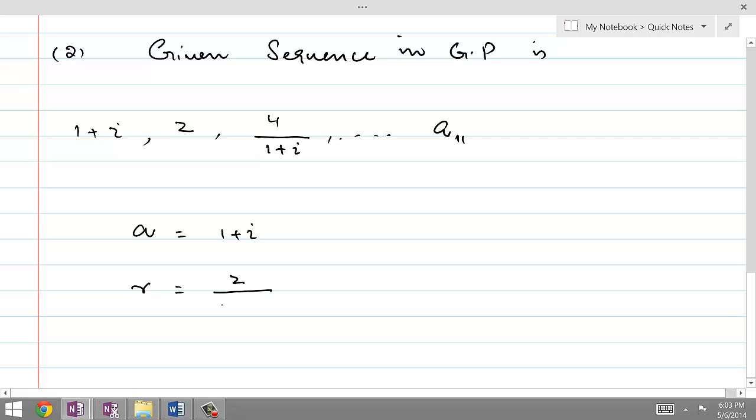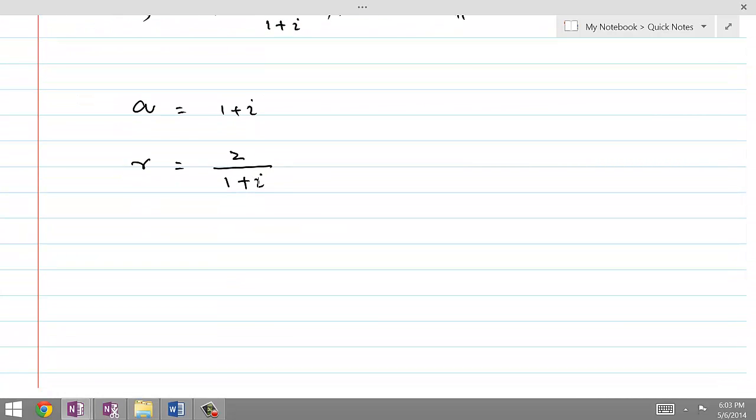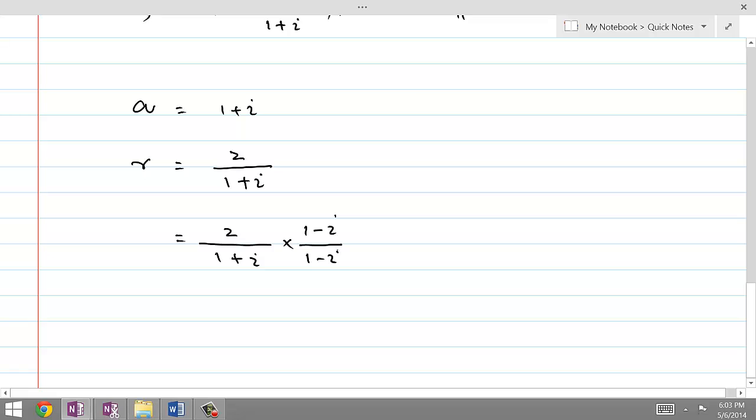So this will be 2 over 1 plus iota. Because complex number iota is involved, now we are going to rationalize, and this will be equal to 2 over 1 plus iota times 1 minus iota over 1 minus iota. This is rule for rationalization.